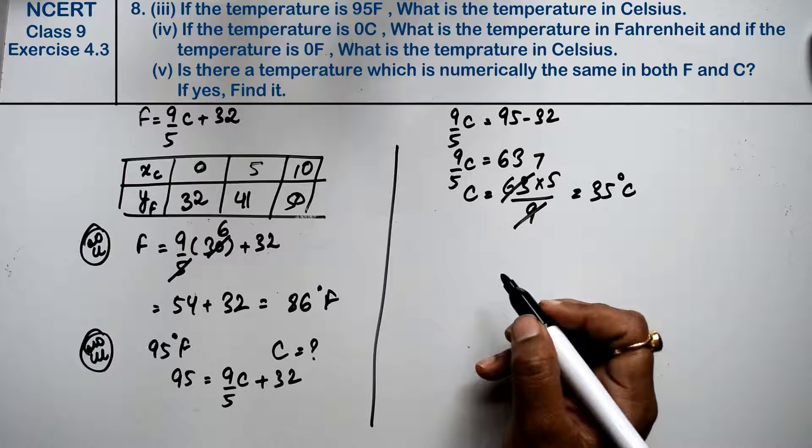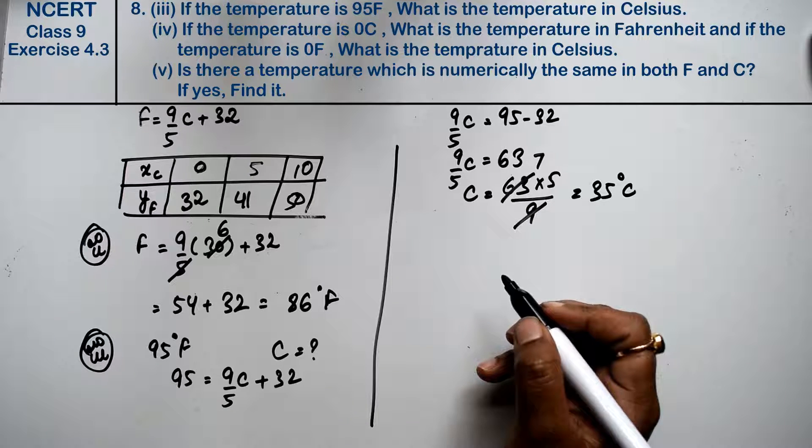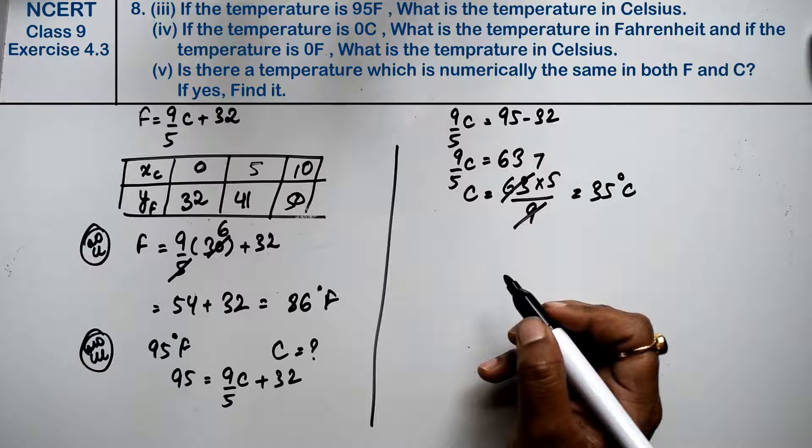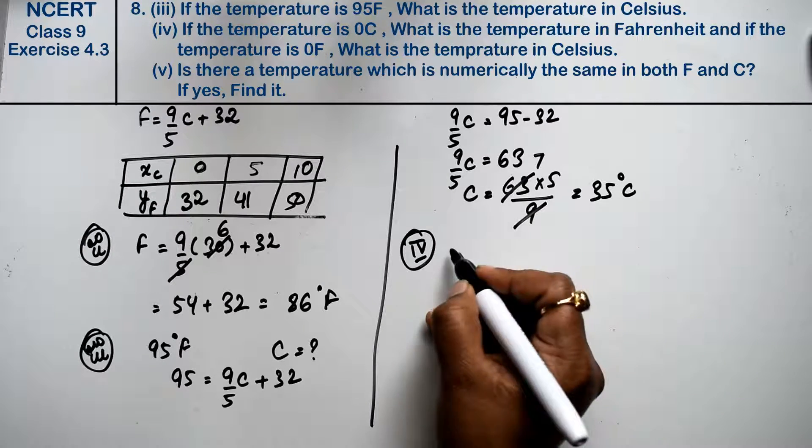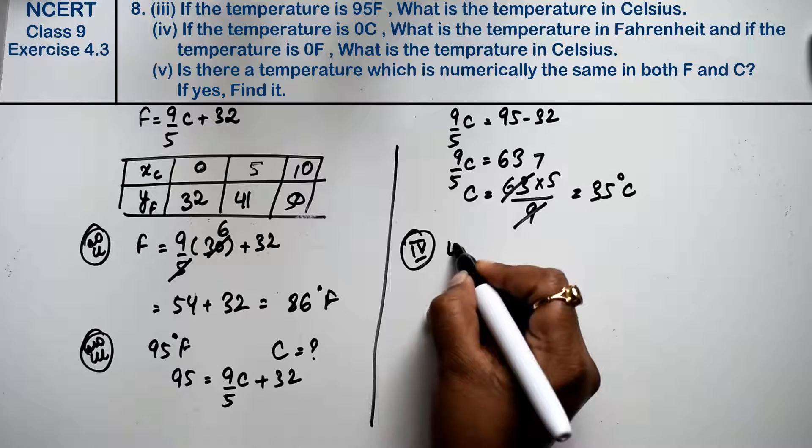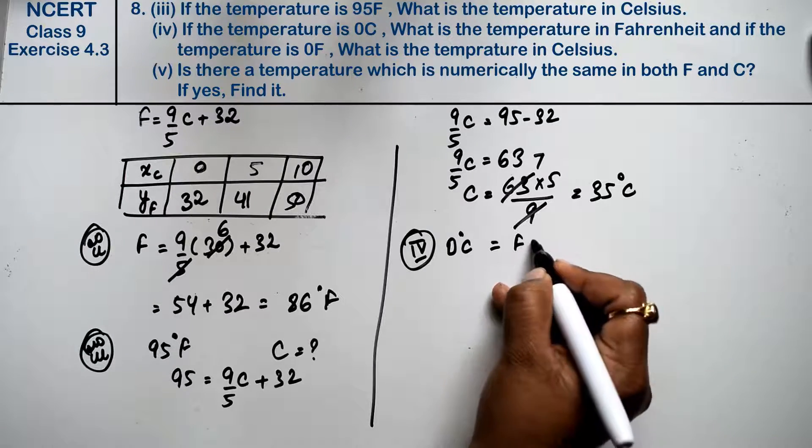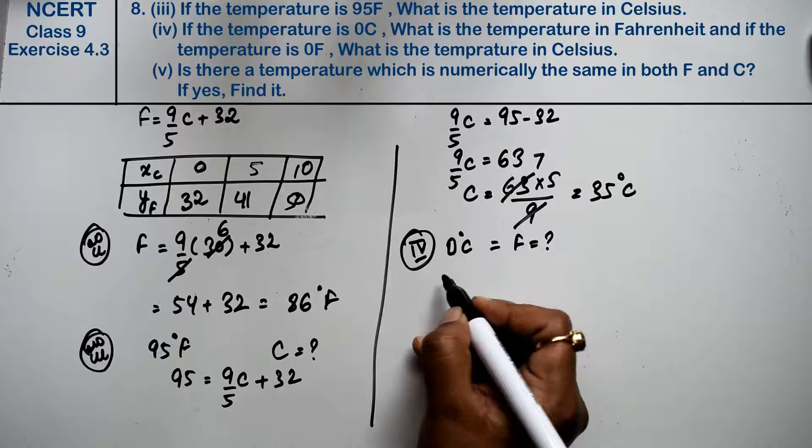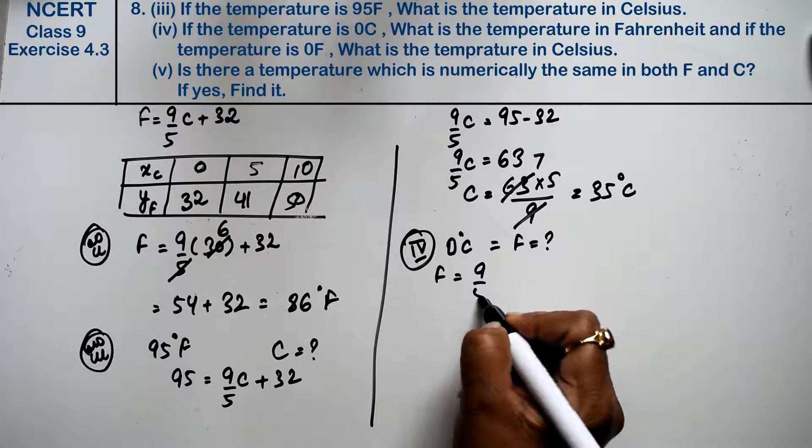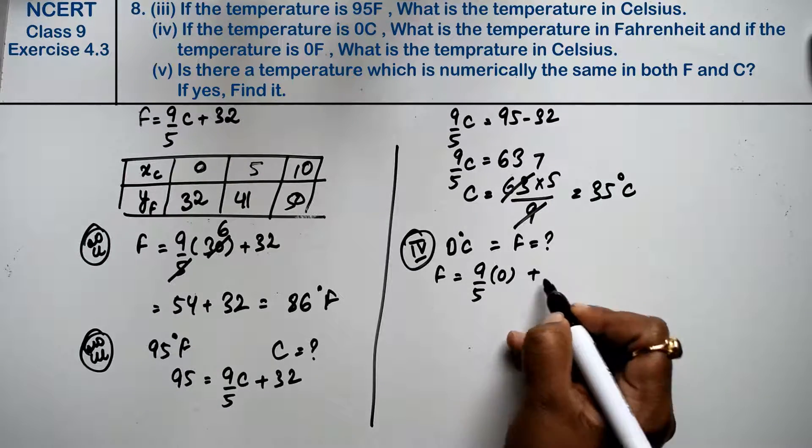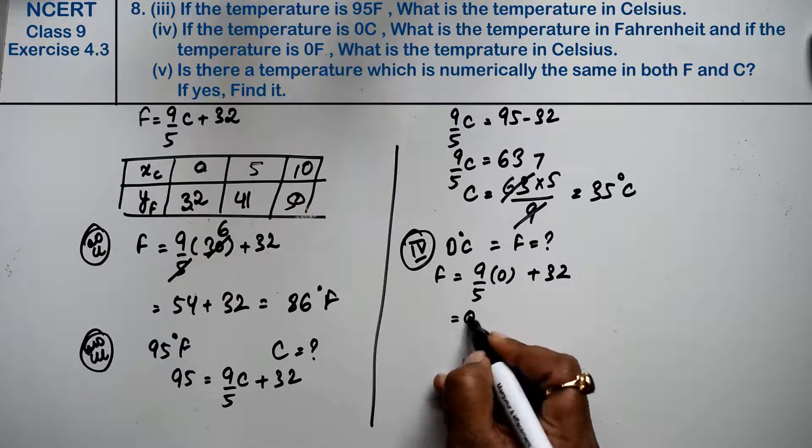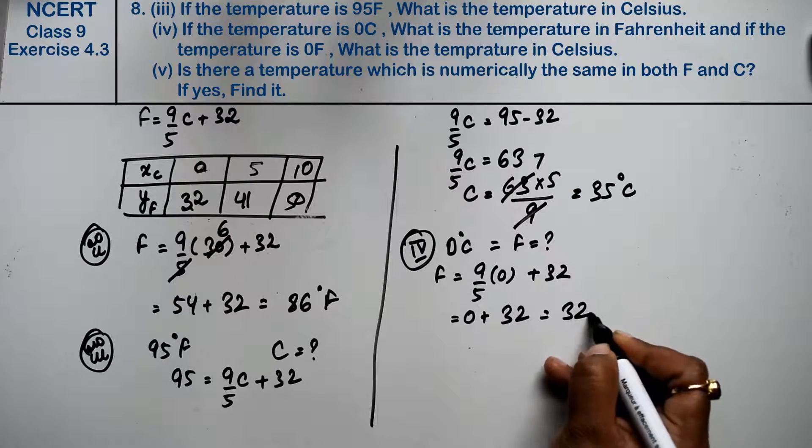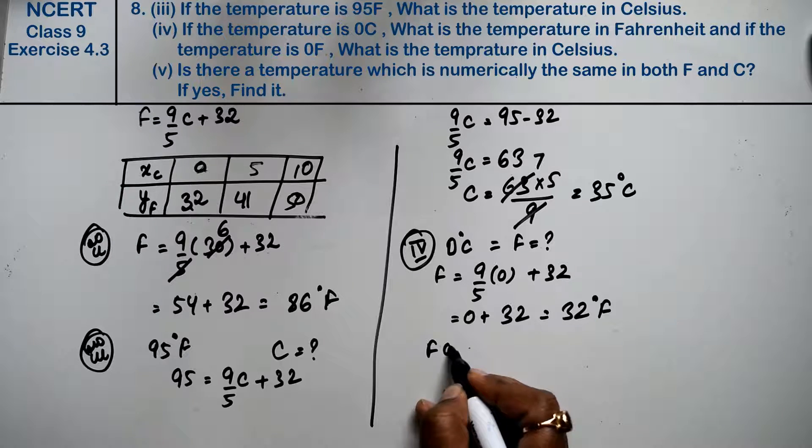Let's do 4th part. If the temperature is 0 degree Celsius, what is the temperature in Fahrenheit? And if the temperature is 0 Fahrenheit, what is the temperature in Celsius? First, we will find Fahrenheit. If it is 0 degree Celsius, how much is Fahrenheit? So F equals 9 by 5 into 0 plus 32. We have already solved this. 0 plus 32, that is 32 degree Fahrenheit.